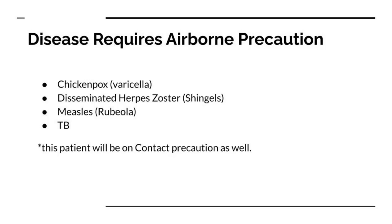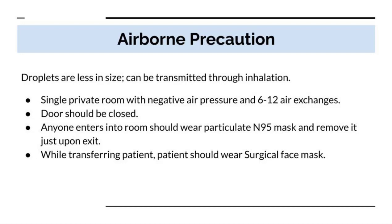Which diseases are transmitted through airborne precaution? First, chickenpox, also known as varicella. Then TB, disseminated herpes zoster (also known as shingles, occurring in immunocompromised patients with a history of chickenpox), measles (rubeola), and smallpox. Disseminated herpes zoster patients will also be on contact precautions. Airborne precaution requires a single private room with negative air pressure and 6 to 12 air exchanges.